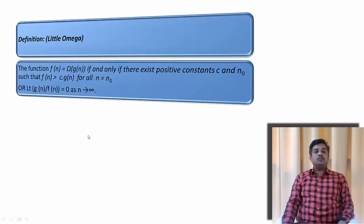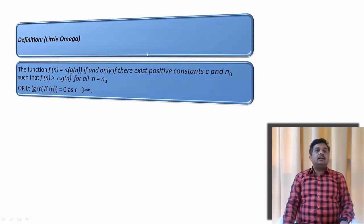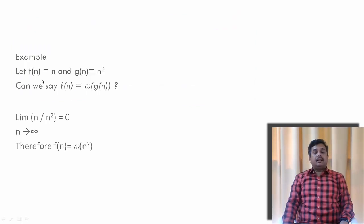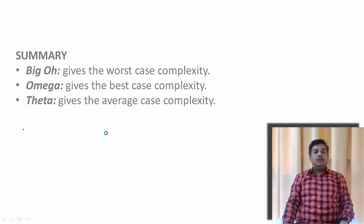Now let us see the little omega notation. f(n) is little omega of g(n) if and only if there exist a positive constant c and n0 such that f(n) is strictly greater than c·g(n). Under Big Omega it was greater than or equal to, but under little omega it is strictly greater than. In limit definition: lim[g(n)/f(n)] = 0 as n → ∞. For example, f(n) = n and g(n) = n². Taking lim[n/n²] = 0 as n → ∞, so f(n) = little omega of n².